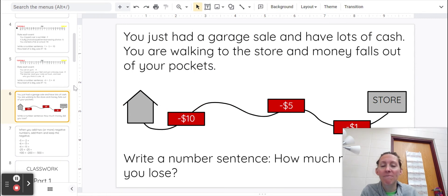Here's another way to think about it. You had a garage sale and have lots of cash. You are walking to the store and money falls out of your pockets. So you start here, and as you walk, you lose a $10 bill, and then a $5 bill falls out, and then a $1 bill falls out.